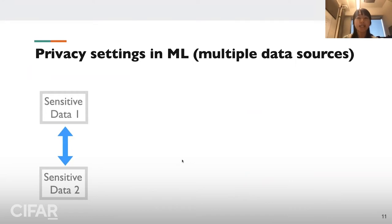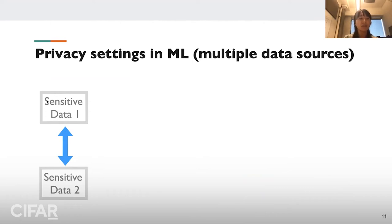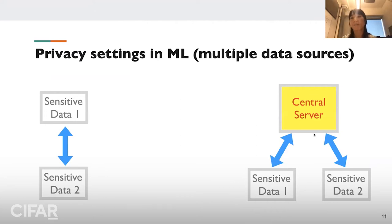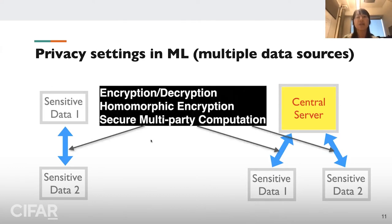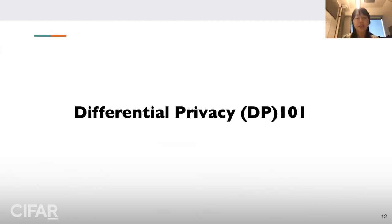There are other privacy settings where data stays in two or multiple different places. Sometimes parties want to communicate without giving data to each other, sharing only computed statistics, or using a third party server to train a model together. In these scenarios there are other techniques, such as cryptography-based encryption and decryption, homomorphic encryption, and secure multi-party computation. If you're interested in learning more, use these keywords to find relevant papers. But today I will only focus on differential privacy.